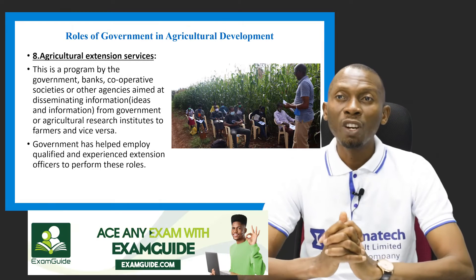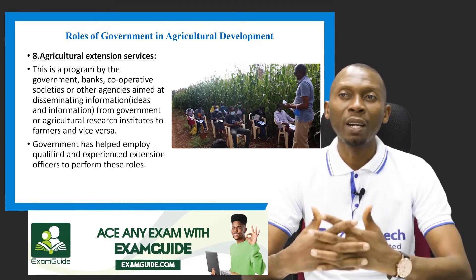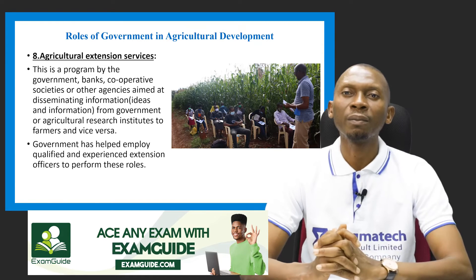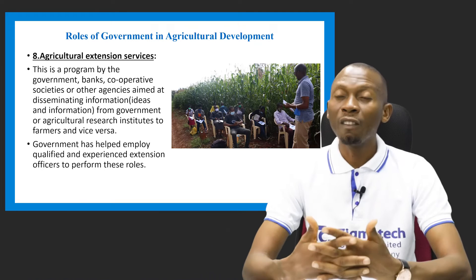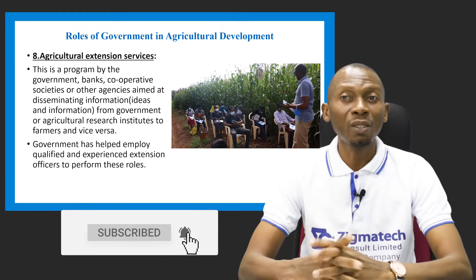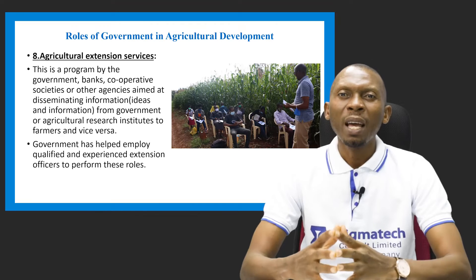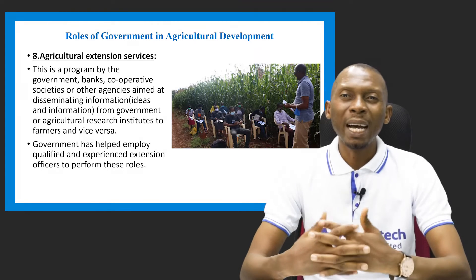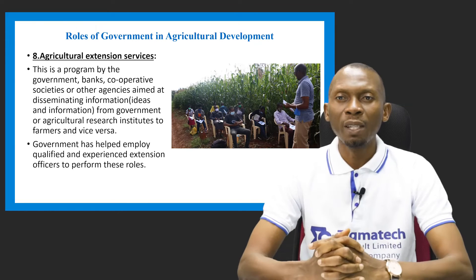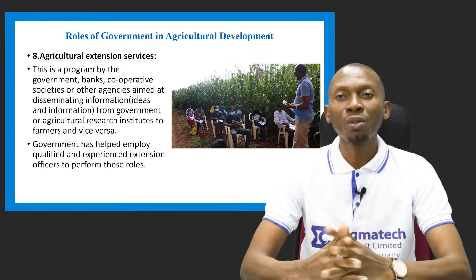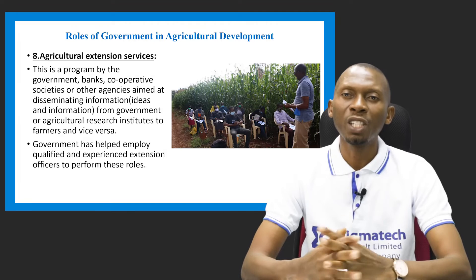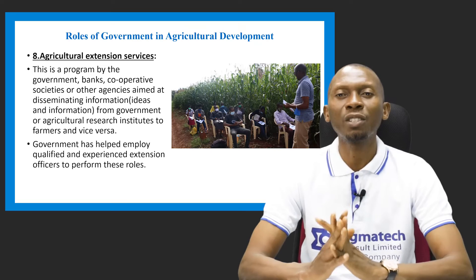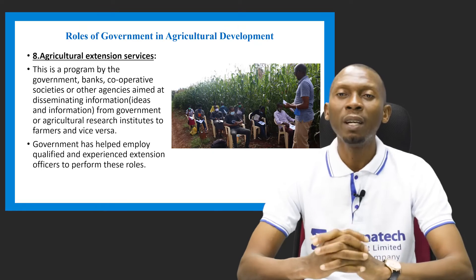Another role the government plays is agricultural extension services. This is a program by the government, banks, cooperative societies and other agents by which they are able to disseminate information — ideas and information to the farmers from the research institute and from the farmers back to the research institute. The government has employed qualified and experienced extension officers in order to perform these roles.